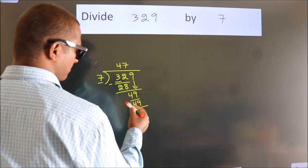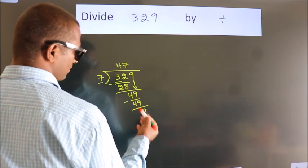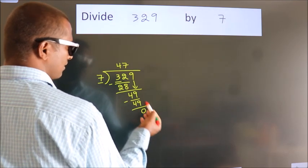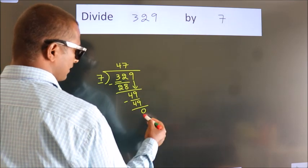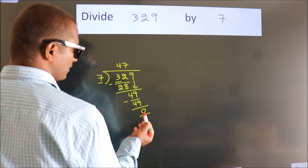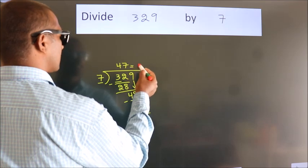Now we subtract. We get 0. After this, no more numbers to bring down and we got remainder 0. So this is our quotient.